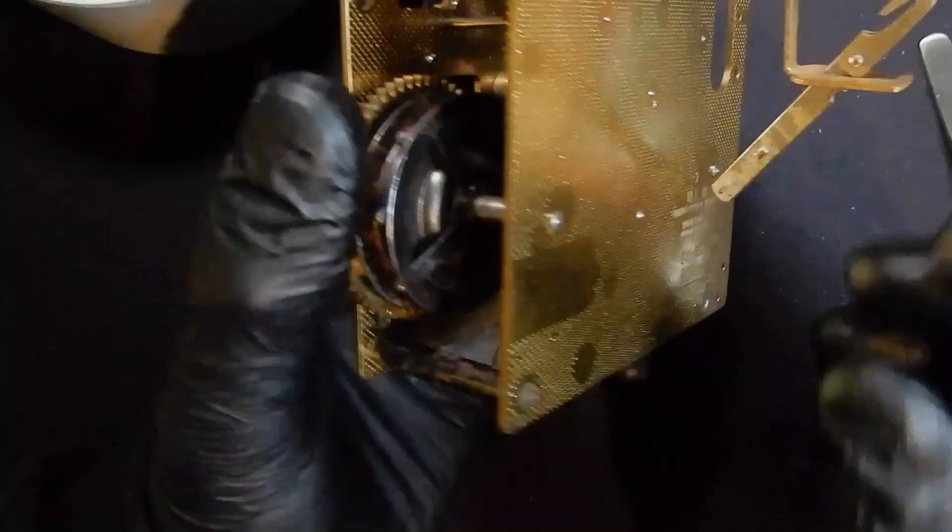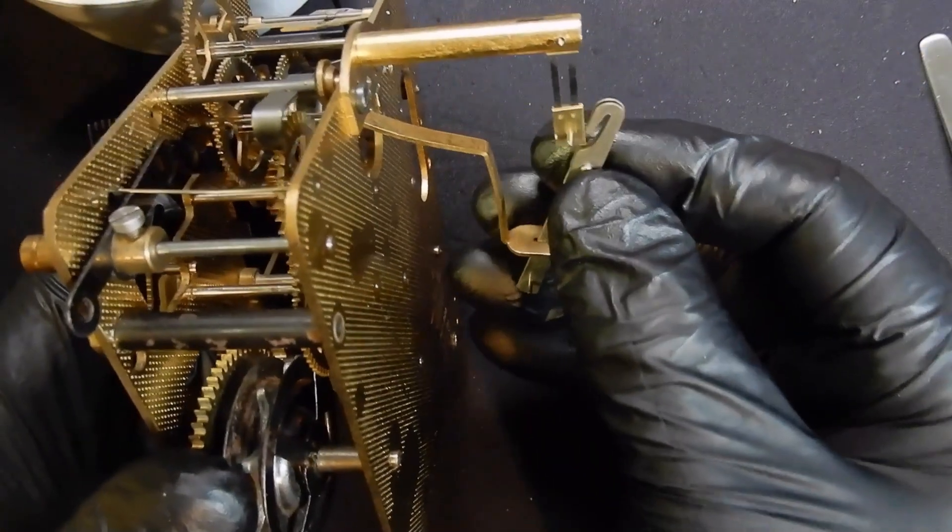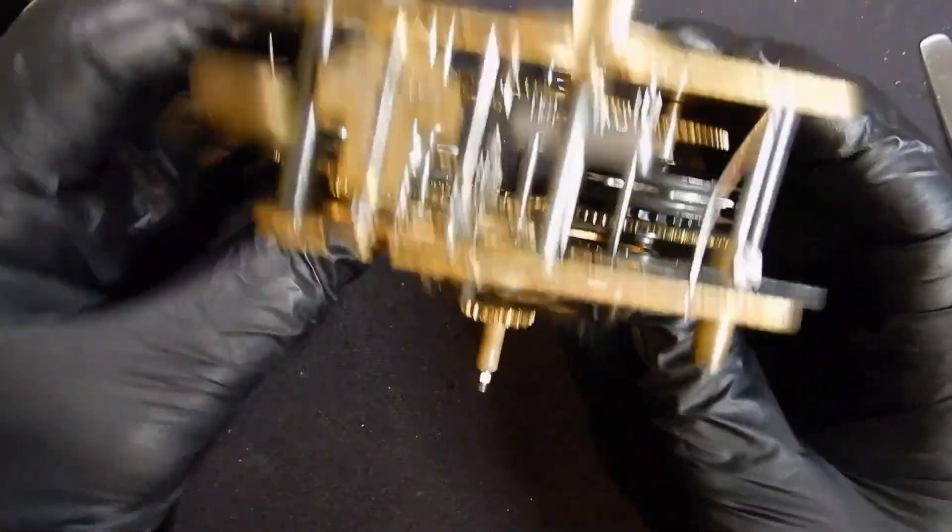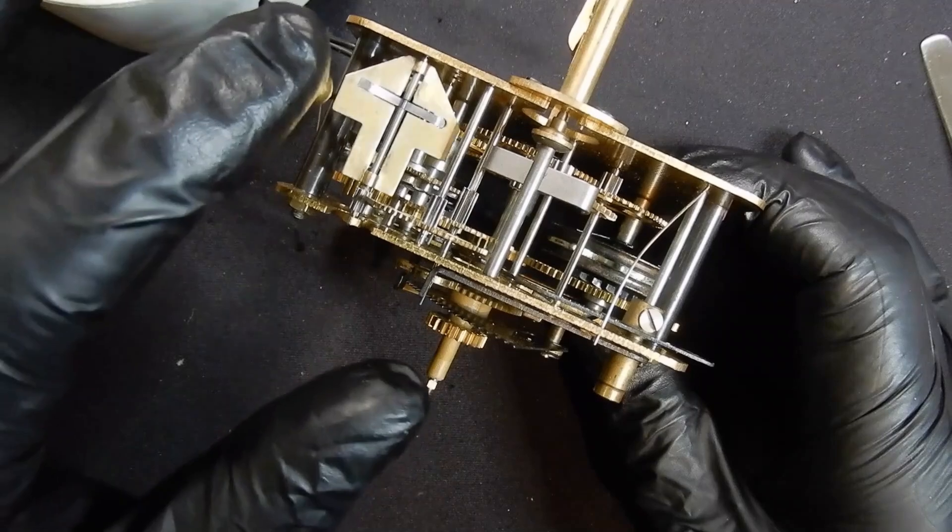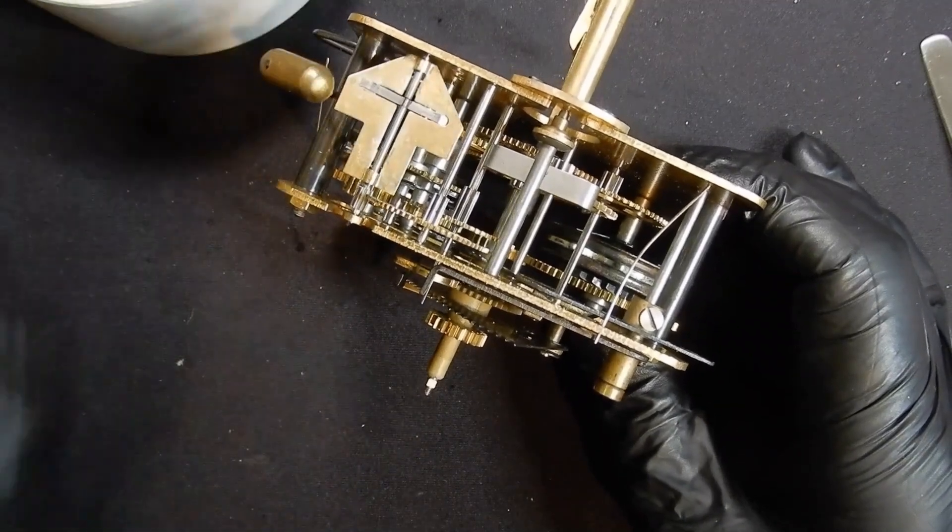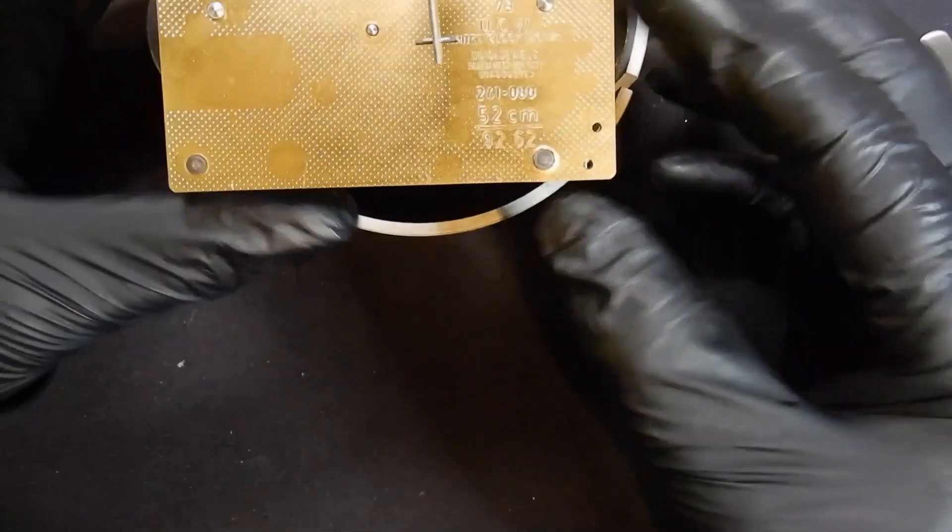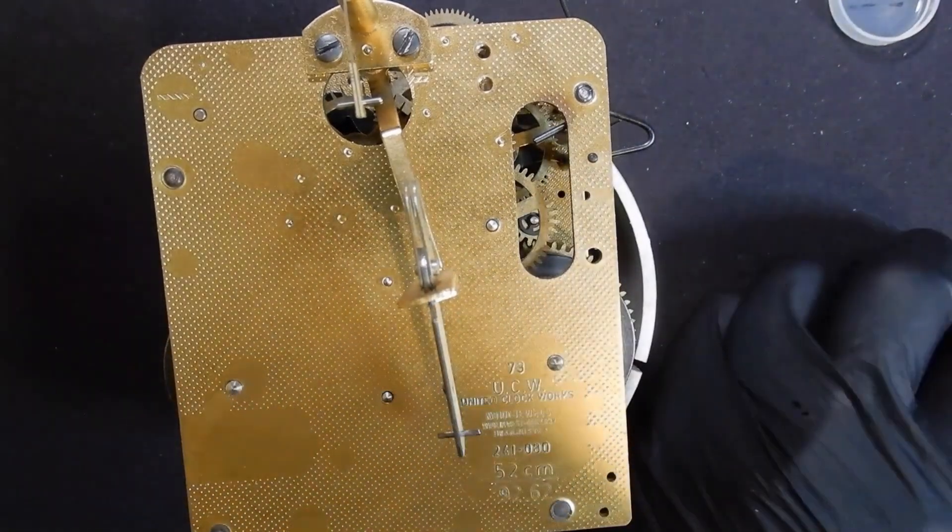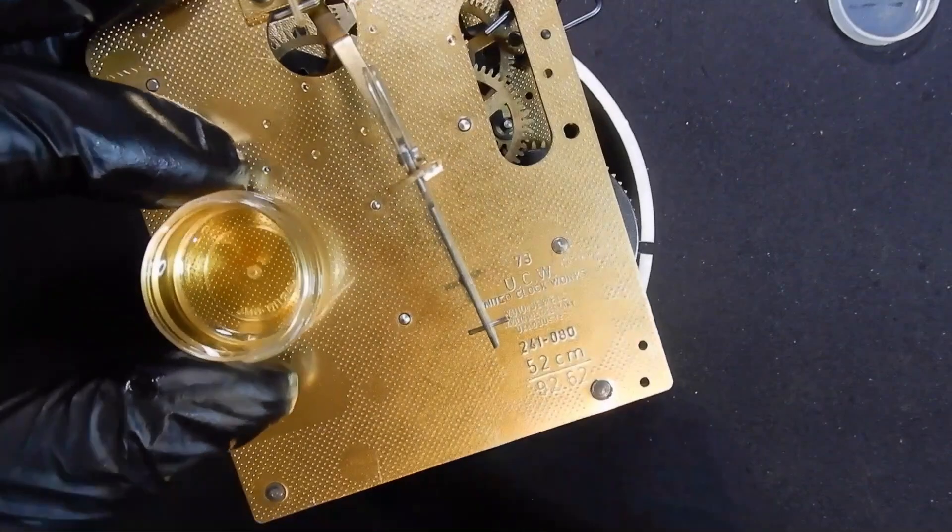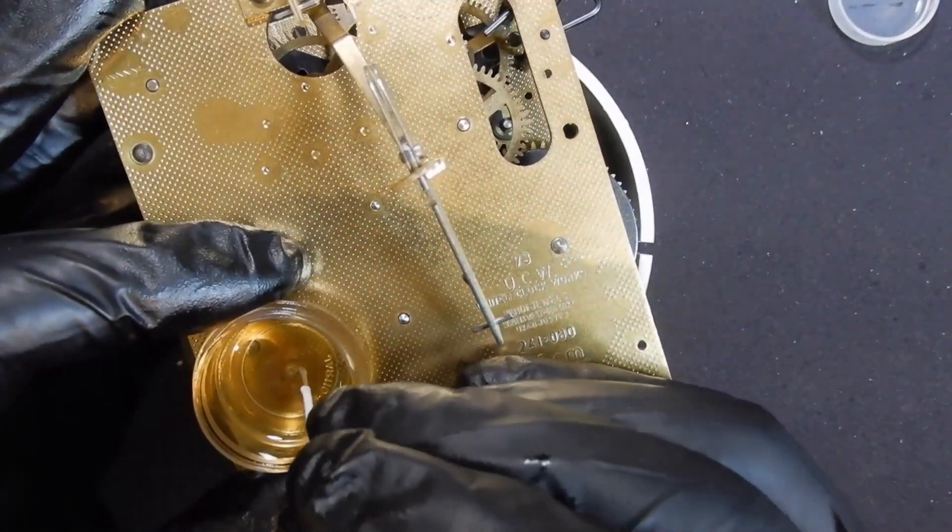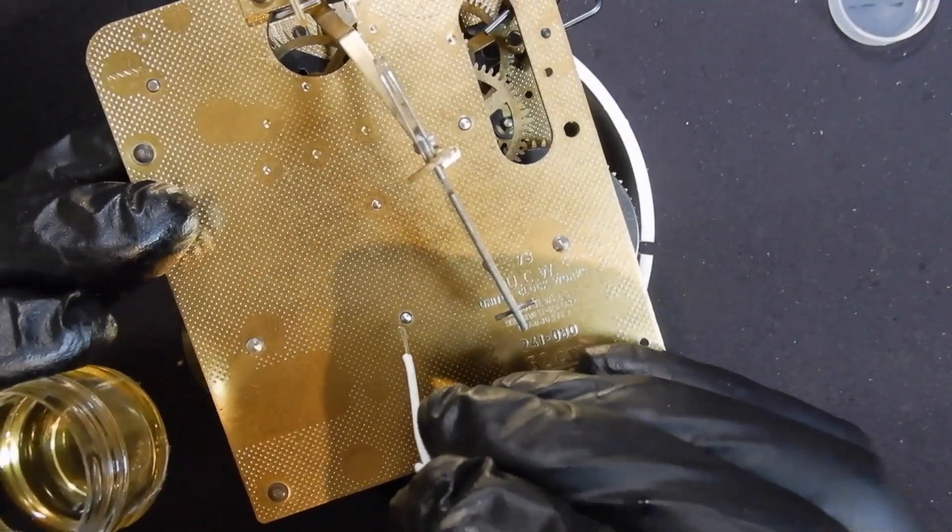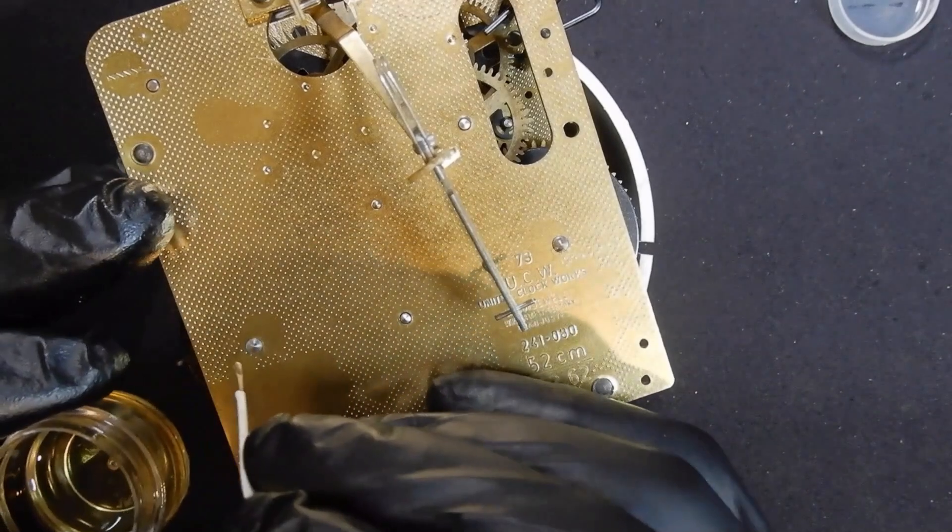Well, I think now I'll probably oil the movement and then we'll put it on a test stand, put some weights on it and see how it runs. Then we can make adjustments to it accordingly. We'll do the back plate first. Get some of my Mobius clock oil out and one of my oilers, and we'll systematically work our way up the movement oiling all the pivots as we go. Double amount of oil on the great wheels.